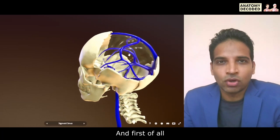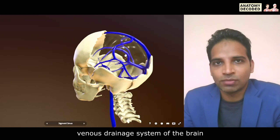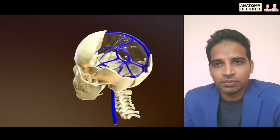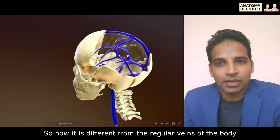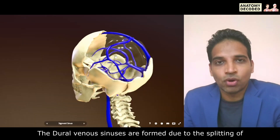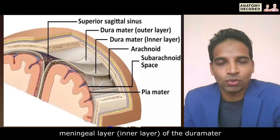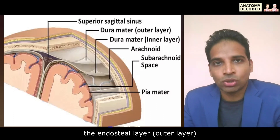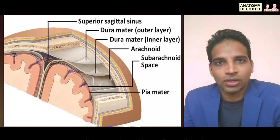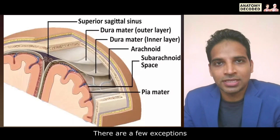First of all, what is a dural venous sinus? It is a kind of venous drainage system of the brain. How is it different from the regular veins of the body? The dural venous sinuses are formed due to the splitting of the endosteal layer and meningeal layer of the dura mater. The cranial dura mater has two layers: the endosteal layer and the meningeal layer. Most of the dural venous sinuses are formed due to this splitting, with a few exceptions.